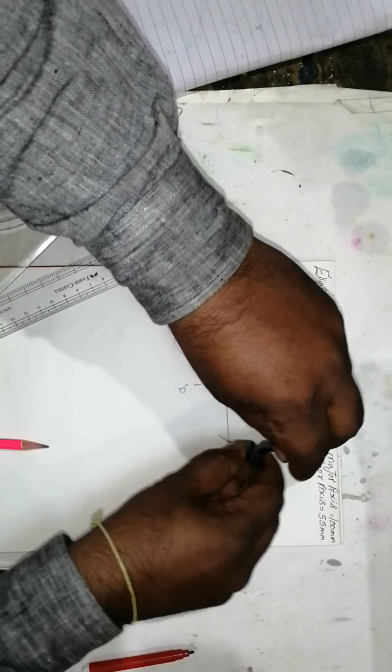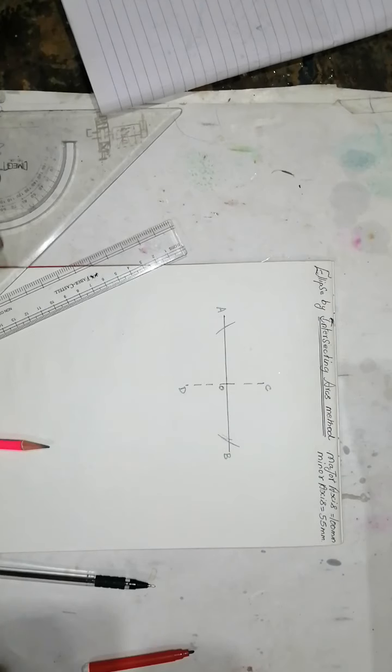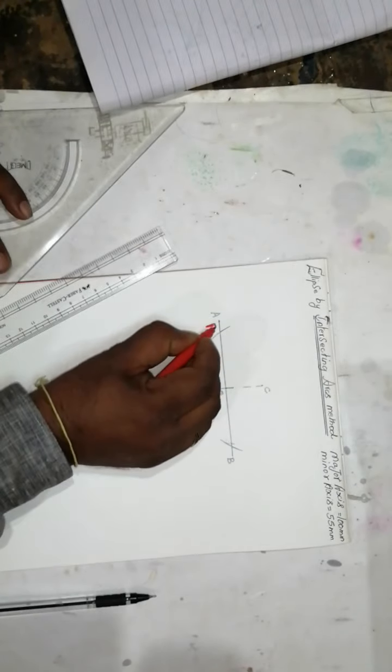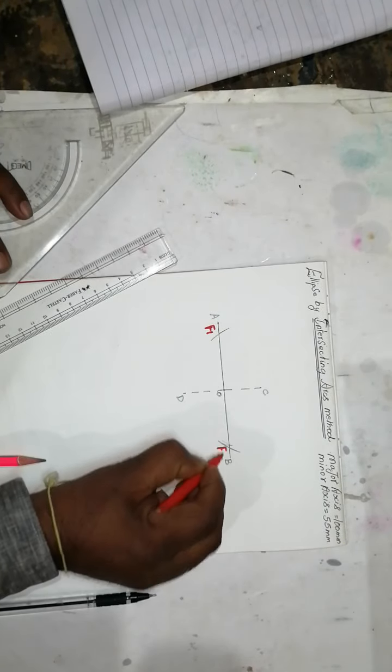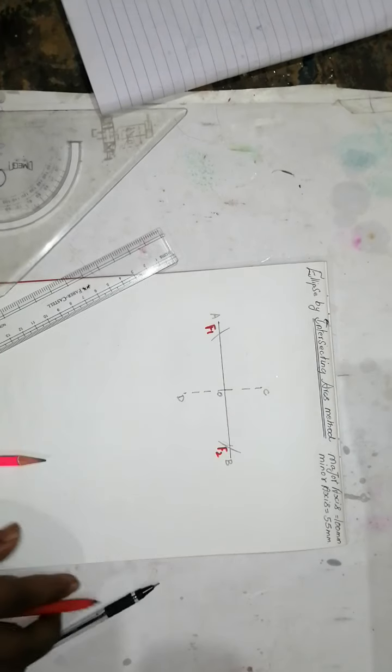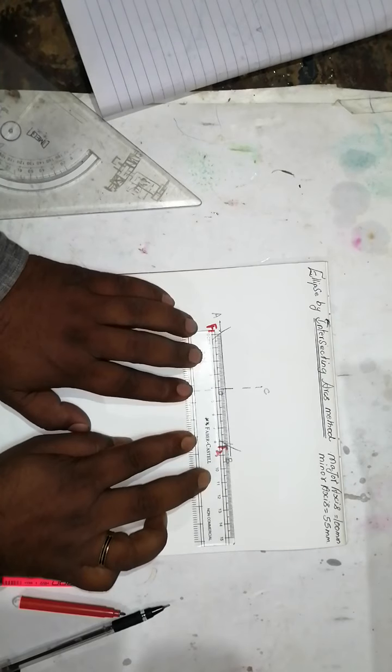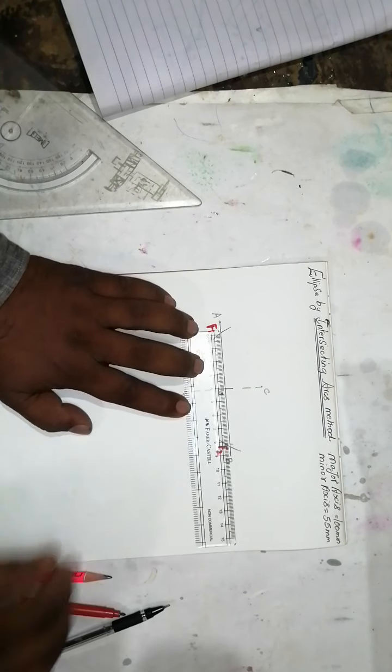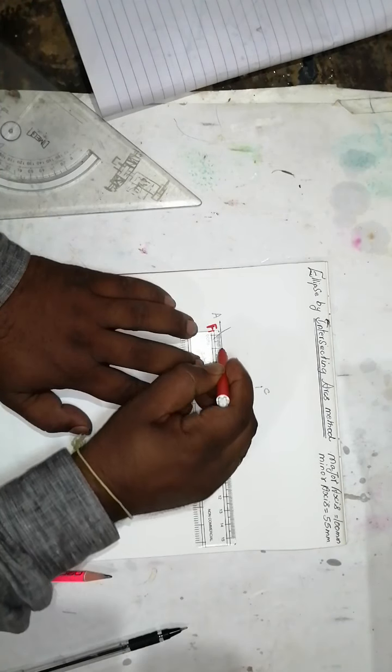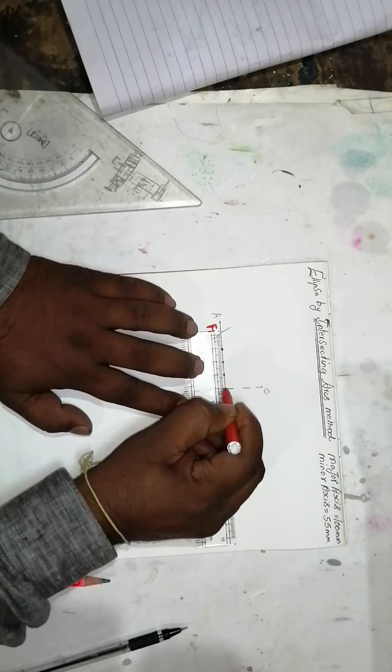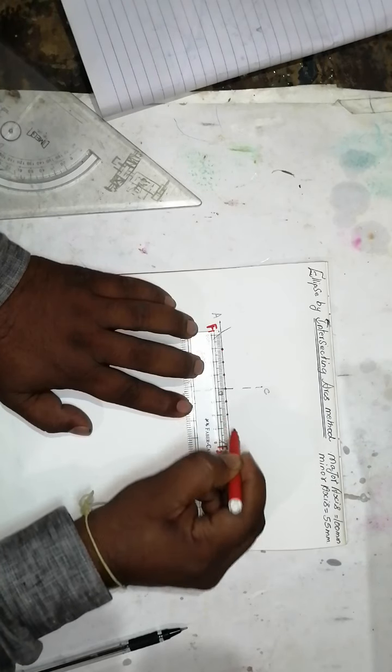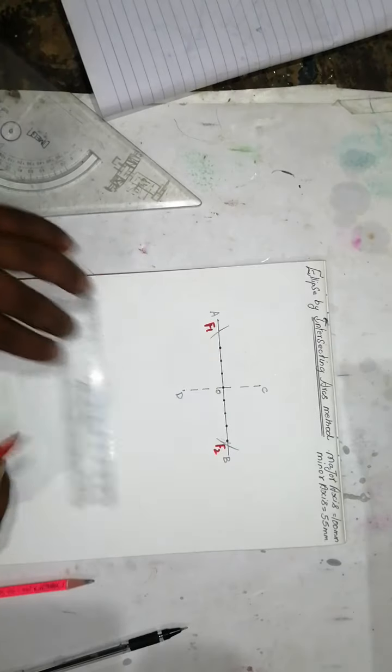The arc will come like this, so mention this as F1 and F2. We got the focus points. Then divide the distance into parts: one, two, three, four, five, six, seven - we got eight points.